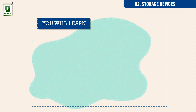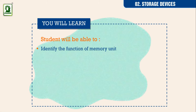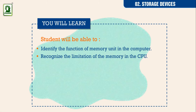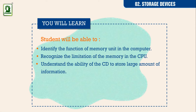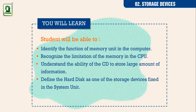Students will be able to: identify the function of the memory unit in the computer; recognize the limitation of the memory in the CPU; understand the ability of the CD to store large amounts of information; define the hard disk as one of the storage devices fixed in the system unit; and differentiate between memory, CD, and hard disk.